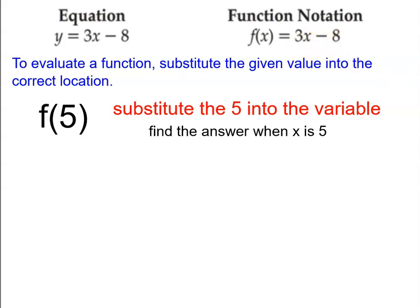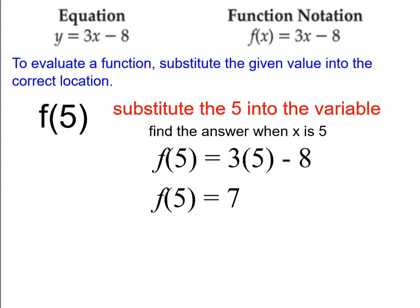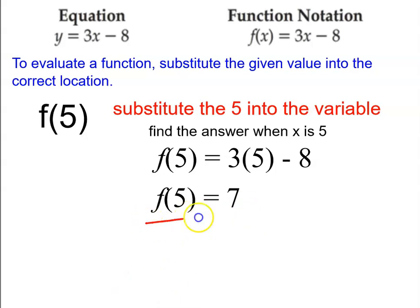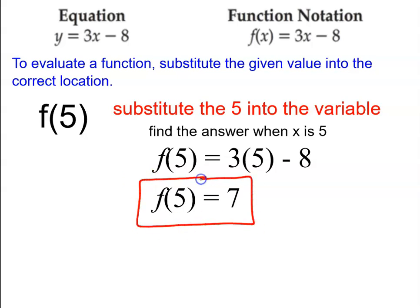For the first example, 3x minus 8, I'll show you what it looks like when you are given an input. If you have f of 5, you substitute the value of 5 into the variable position for x. Once you do that, you get 15. 15 minus 8 is 7. Now this is not math — this is the name of the function and what you're putting in. You're not trying to isolate the letter f. F is not the variable. F is the name of the function. The variable is x. So this sentence says: if you go to function f and put in a 5, out comes a 7.